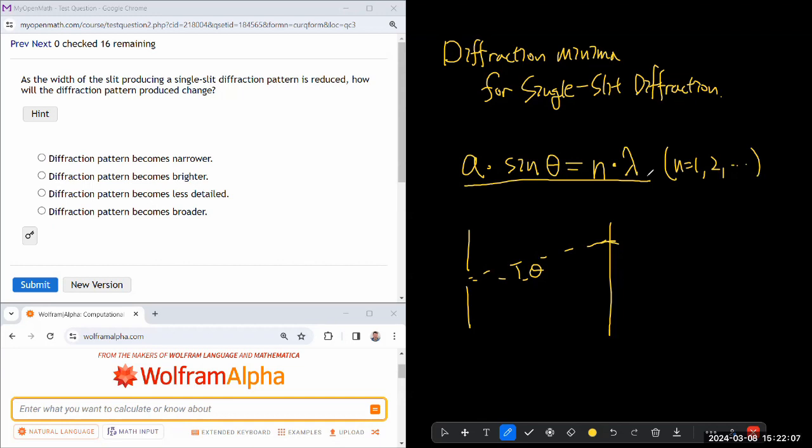So by looking at this formula you can do this quick conceptual analysis. The right hand side is constant, it doesn't change for a given n. So on the left hand side, whenever one of the two quantities change, the other quantity has to change to match.